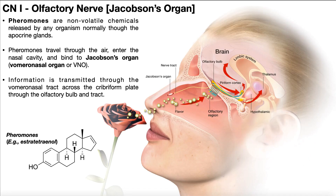In this video, we're going to continue talking about cranial nerve 1, or the olfactory nerve, but we're now going to switch gears and talk about a different part of it — that's Jacobson's organ, also called the vomeronasal organ.